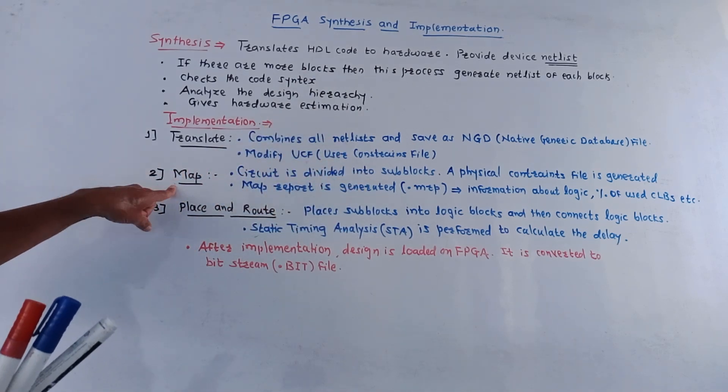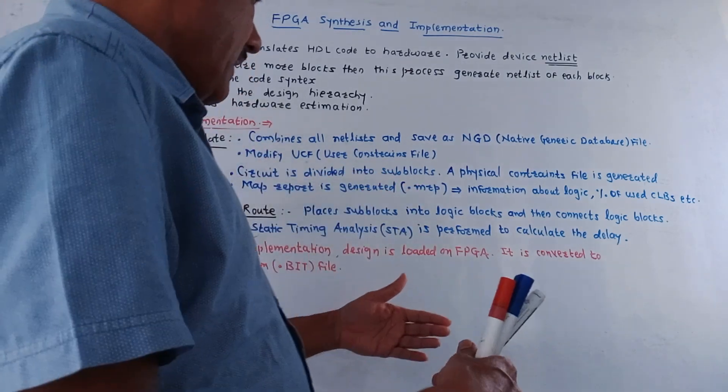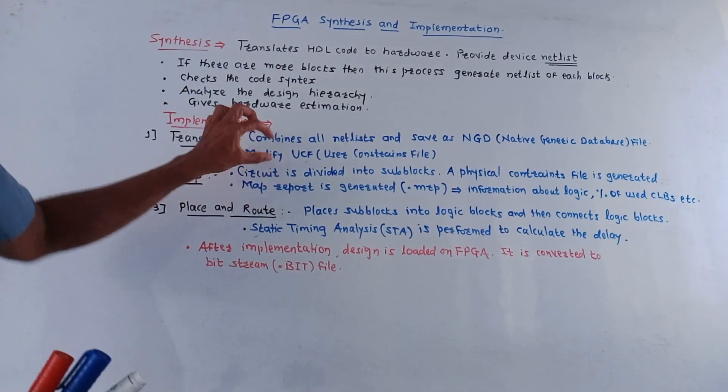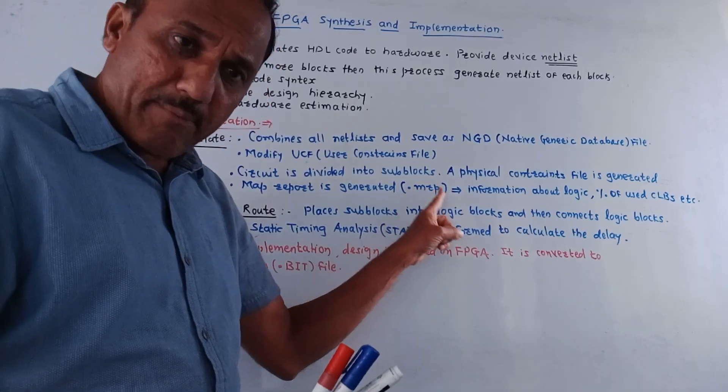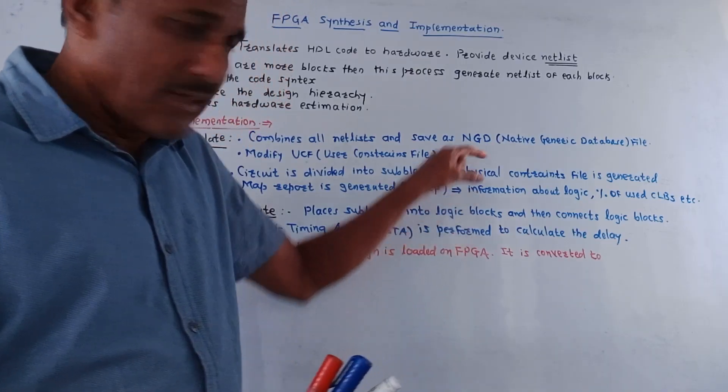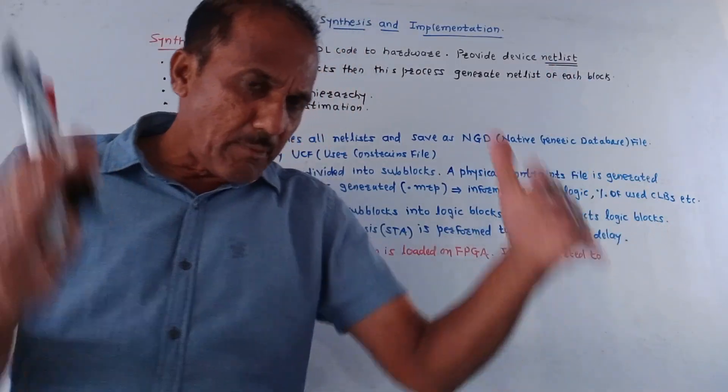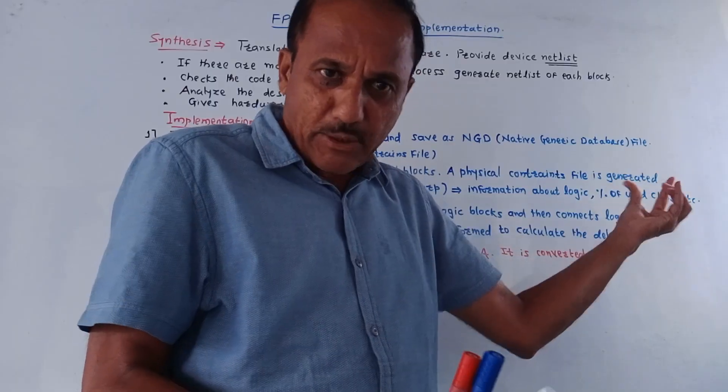Then second step is mapping or map. So circuit is divided into number of sub-blocks. A physical constraint file is generated and a map report is generated, that is .mrp file is generated. This file informs about the logic and the percentage of CLBs used by that particular block.